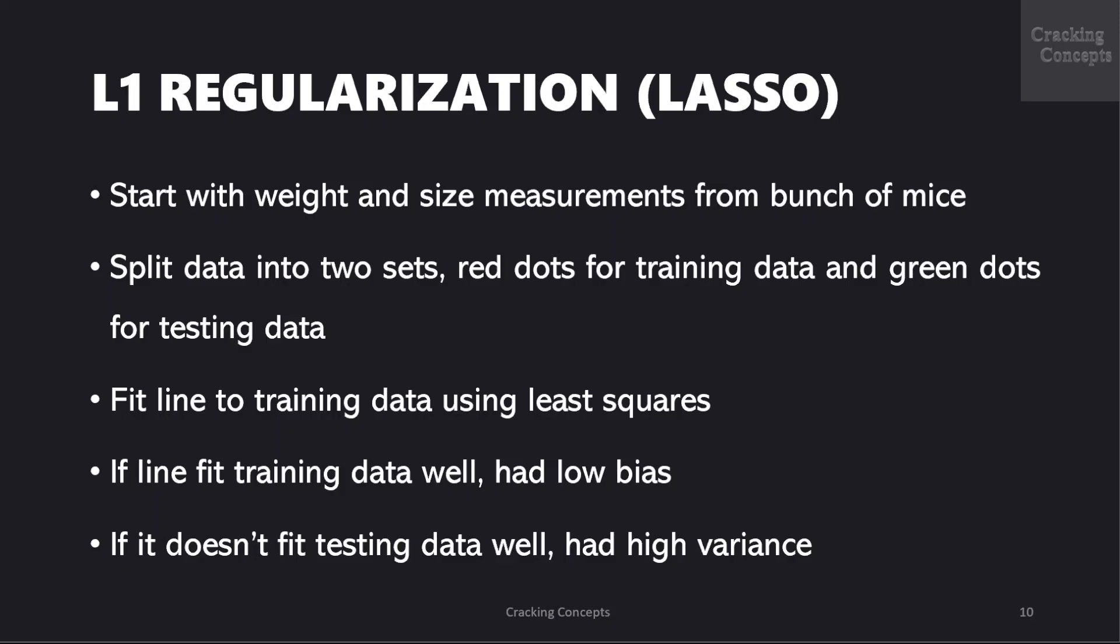Now let us try to understand this better with an example. So we start with the weights and size measurements from a bunch of mice and we split the data into two sets. The red dots which are standing for training data and green dots for testing data. We fit a line to the training data using the least squares which means minimizing the sum of squared residuals. And when we do this even if the line fit the training data very well it has low bias and if it does not fit the testing data well it has high variance.